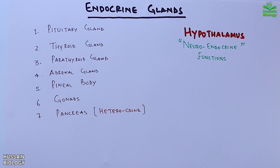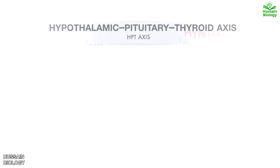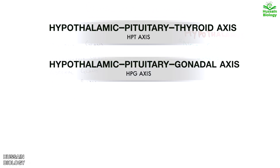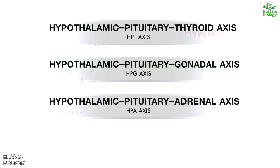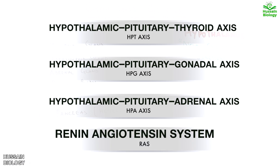Furthermore, these glands within the capacity of the nervous system form the neuroendocrine systems that coordinate with each other — what we call the endocrine system axes. The first axis is the hypothalamic-pituitary-thyroid axis. The second is the hypothalamic-pituitary-gonadal axis, the HPG axis. Third is the hypothalamic-pituitary-adrenal axis. Fourth is the renin-angiotensin system. This is the brief outlook of the endocrine system and its glands.